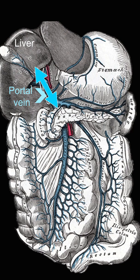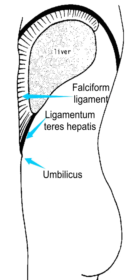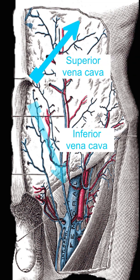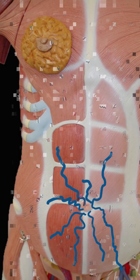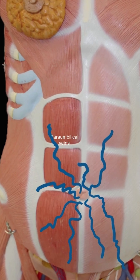Some portal tributaries communicate through the ligamentum teres hepatis at the lower edge of the falciform ligament with the umbilicus. Since the anterior abdominal wall drains to the superior and inferior vena cavae, the veins around the umbilicus would provide an alternative route for the portal blood to reach the systemic circulation.